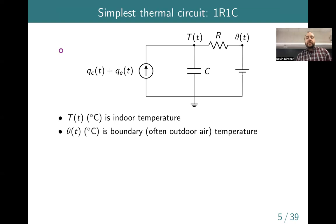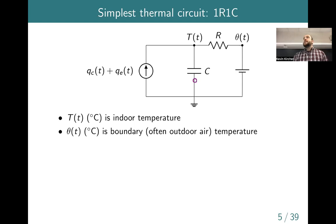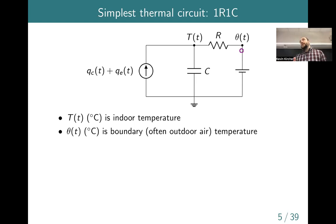The simplest circuit that can reasonably represent a room is called 1R1C — one resistor and one capacitor, drawn just like an electrical circuit. The capacitor is an energy-storing element representing the air inside the room. T is the indoor temperature, analogous to what a wall thermostat measures. R is the thermal resistance between T and a boundary temperature theta — for example, the 35°F outdoor air temperature. There are also current sources for controlled heat input Qc and exogenous heat Qe.